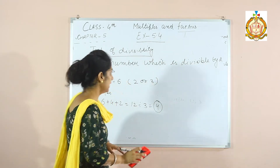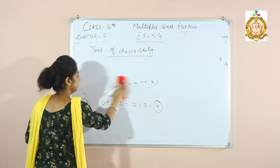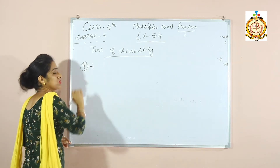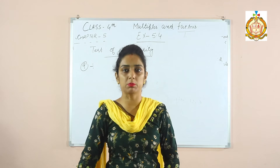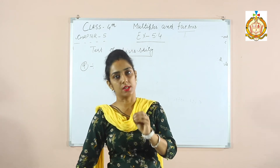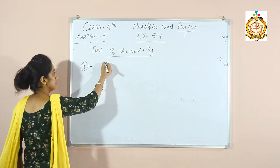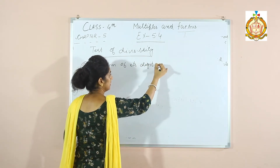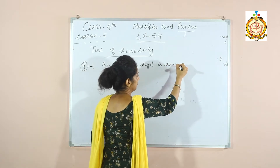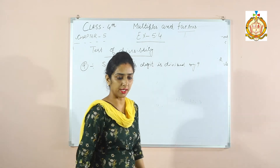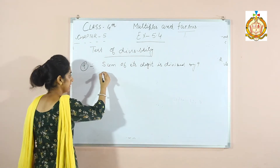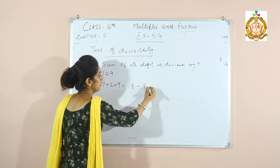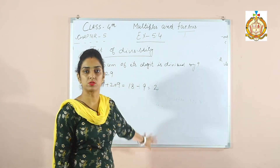Divisibility by 9: a number is divisible by 9 if the sum of its digits is divisible by 9 — similar to the rule for 3. For example, 729: 7+2+9=18, and 18 divided by 9 equals 2, so 729 is divisible by 9.